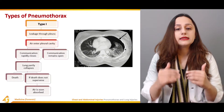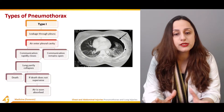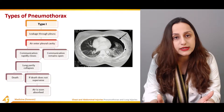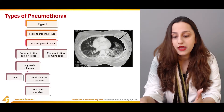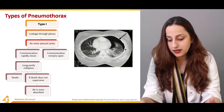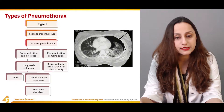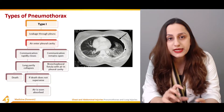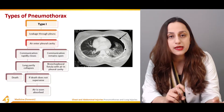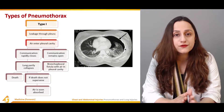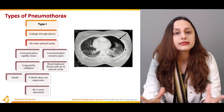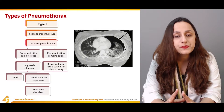It can also happen that the communication remains open — although there is air in the pleural cavity, the lung is still quite patent. We then have a broncho-pleural fistula with air in the pleural cavity. This fistula is the communicating space formed between the pleura and the pleural cavity, which allows the patency of the lung to be maintained.